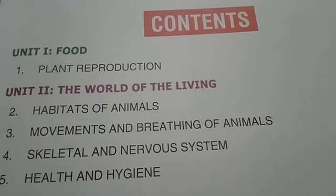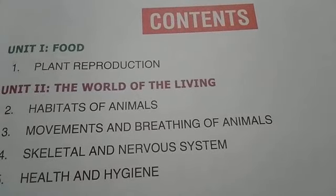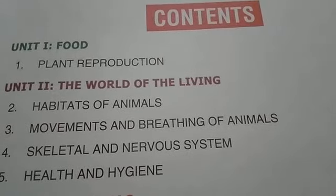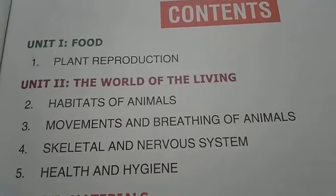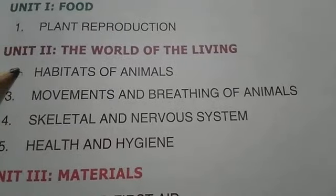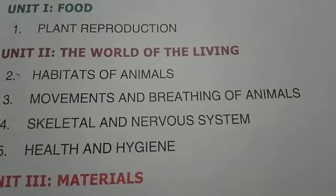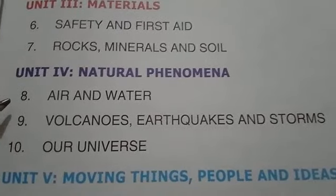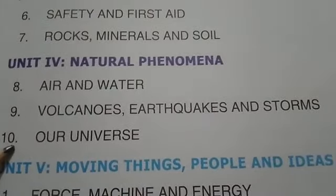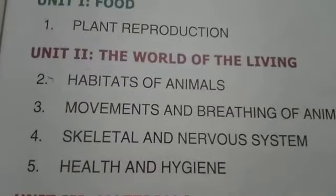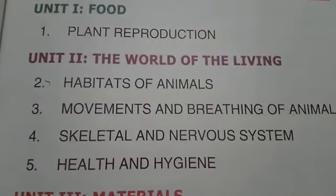You all know the syllabuses for the first term exam, but I am telling you again what the syllabuses are for our first term exam of science. There is Chapter 1 - Plant Reproduction, Chapter 2 - Habitats of Animals, Chapter 4 - Skeletal and Nervous System, Chapter 8 - Ear and Water, Chapter 10 - Our Universe, and Chapter 12 - Pollution. So, totally there are 6 chapters.